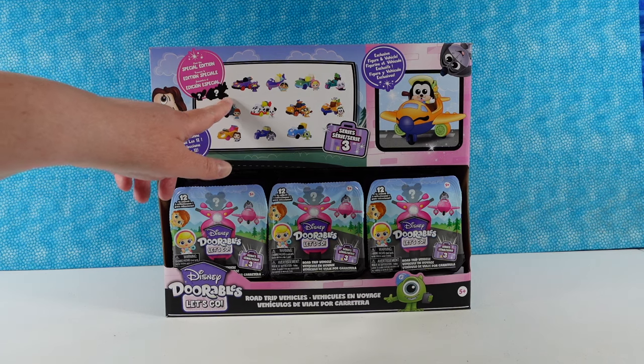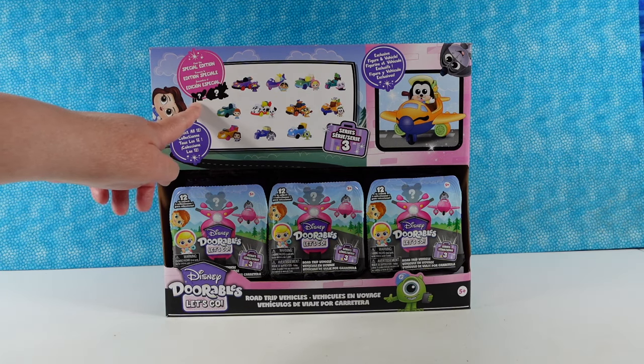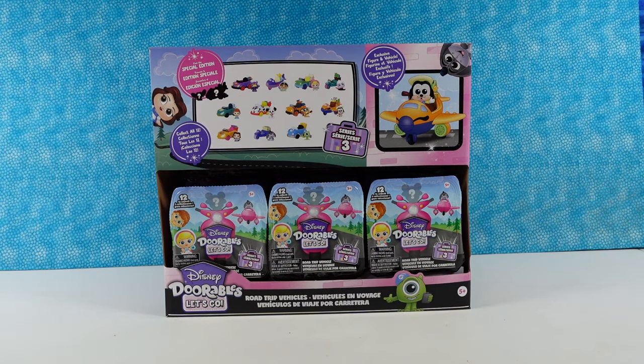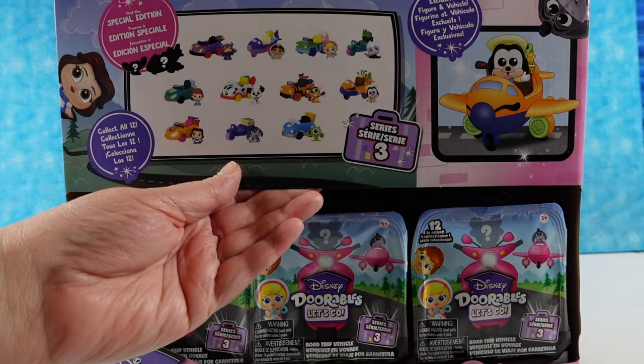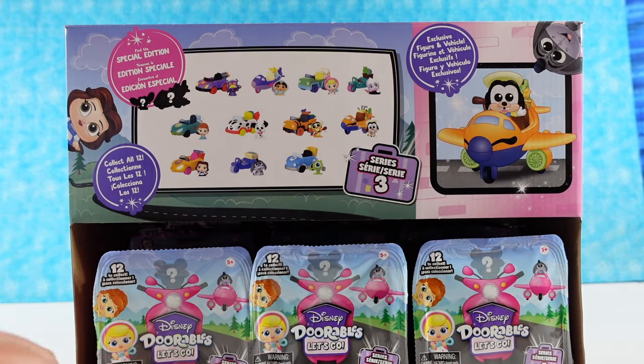Now it says find the special edition, so one is hidden right here. It looks like a stitch based on the ears. It does look that way. So let's see, twelve to collect. I don't know if you guys can see this really well. I'm going to pull this forward a little bit. These are the ones you can get.